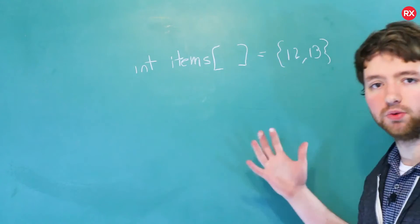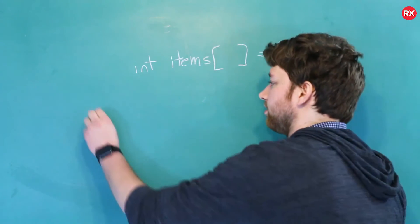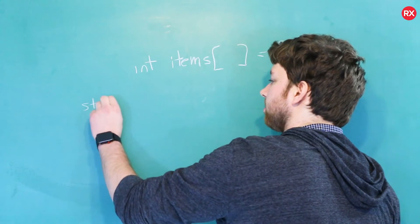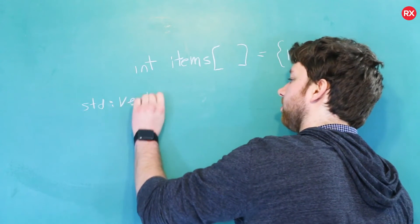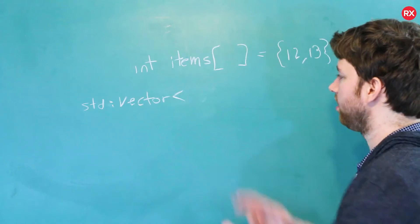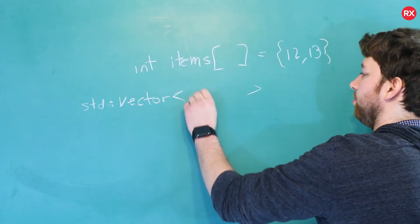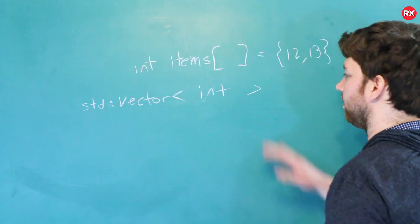With a vector, it doesn't work like that. You create a vector like this. It's in the standard namespace, and then you say vector, and then you use this caret, and then a closing caret, and you can put the type inside of the carets.